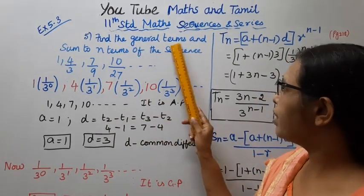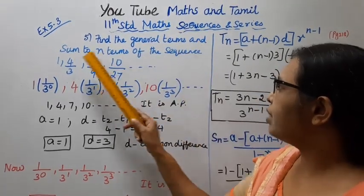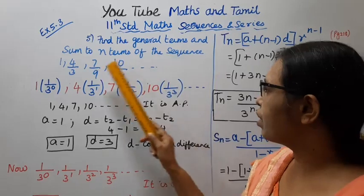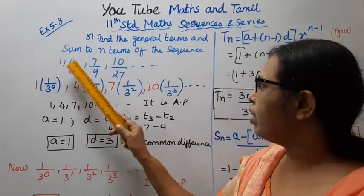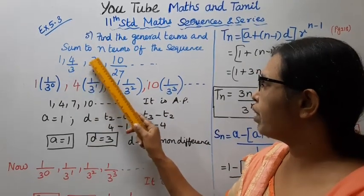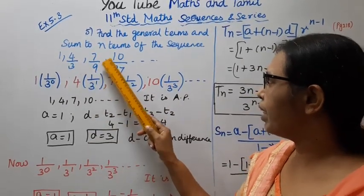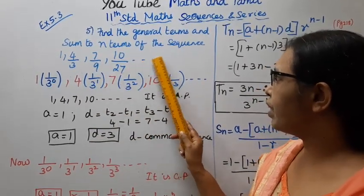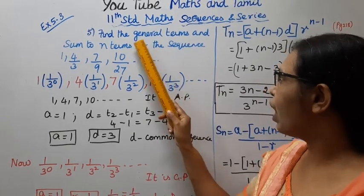Find the general term and sum to n terms of the sequence: 1, 4/3, 7/9, 10/27, etc.